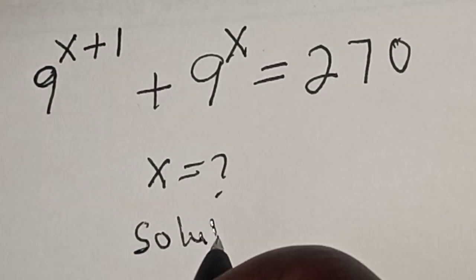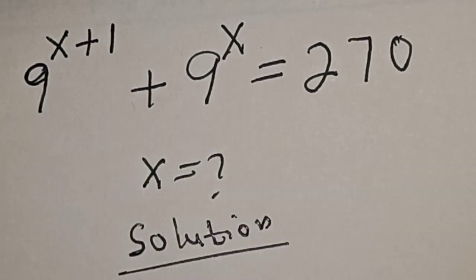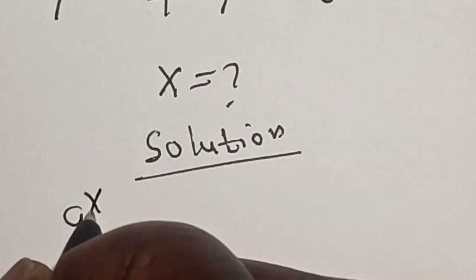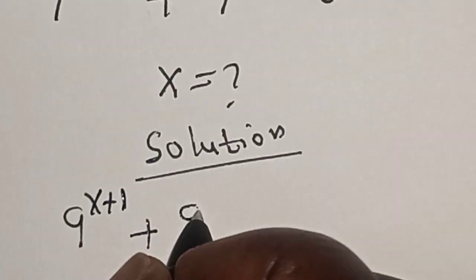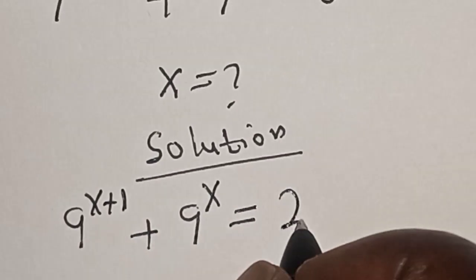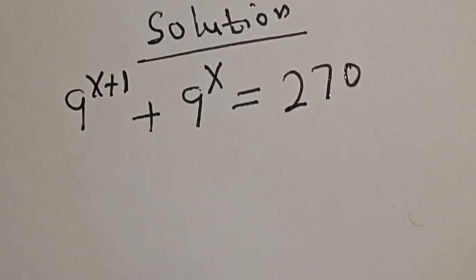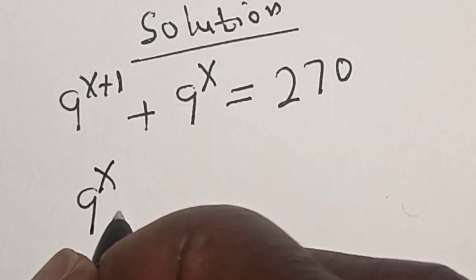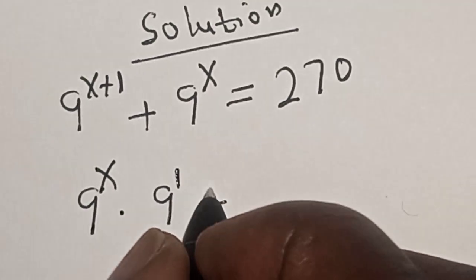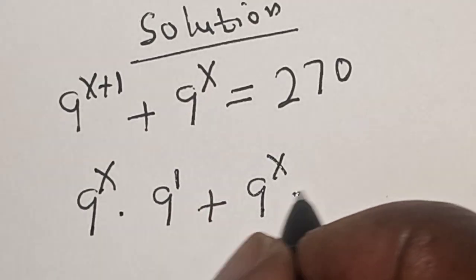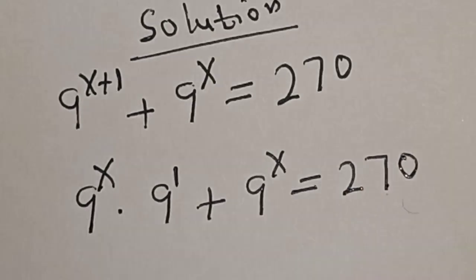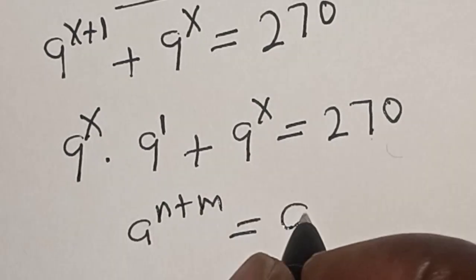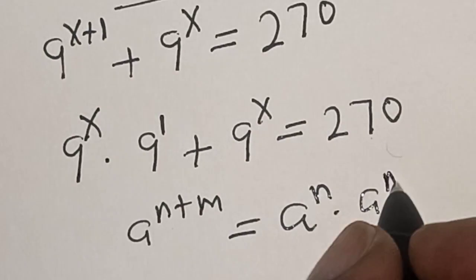Solution. We have the given equation: 9 raised to power s plus 1, plus 9 raised to power s, is equal to 270. This is the same as 9 raised to power s, multiplied by 9 raised to power 1, plus 9 raised to power s, equals 270. That follows the rule that a raised to power n plus m equals a raised to power n, multiplied by a raised to power m.